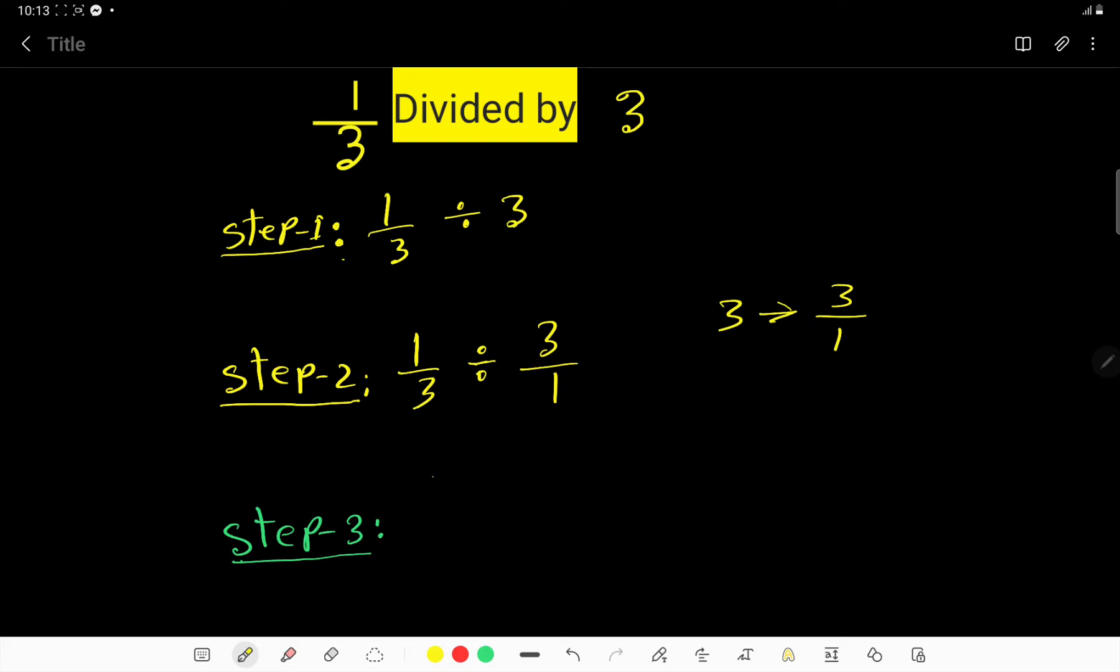In the third step, we have to change this division sign to a multiplication sign and take the reciprocal of this fraction. The reciprocal of this fraction will be 1 over 3 - that is, we have to change the position of the numerator and denominator. You just have to take the opposite.